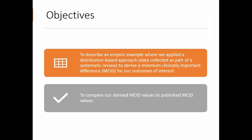Our objectives are to describe an empiric example where we applied a distribution-based approach using data collected as part of a systematic review to derive an MCID for our outcomes of interest. And then we're going to compare the derived MCID values to published MCID values, which is why I use this example specifically — because there are a number of scales out there for which we don't actually have published values.